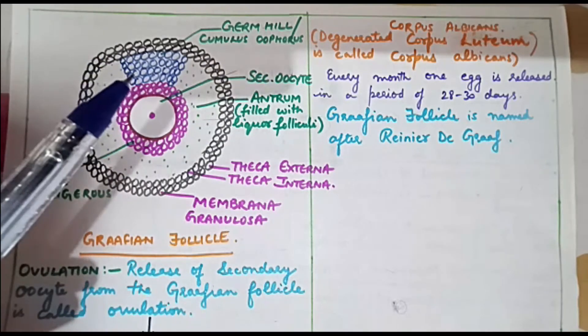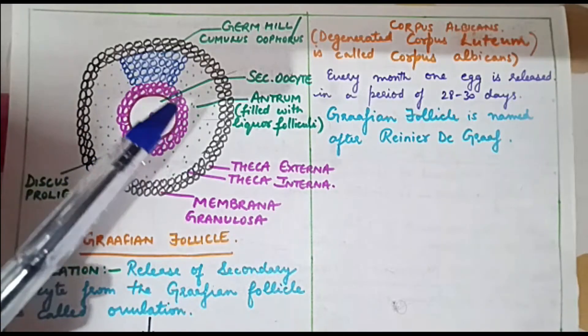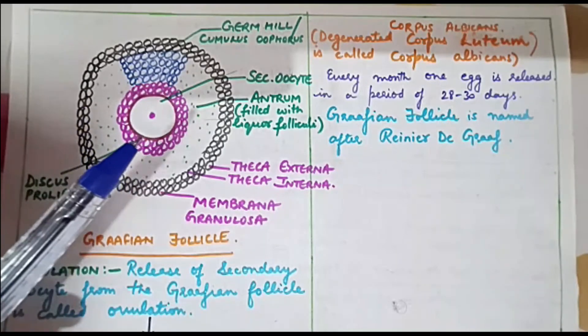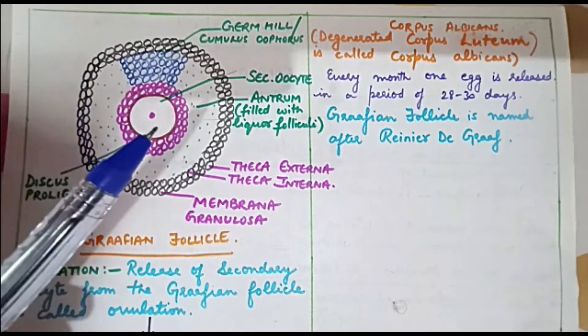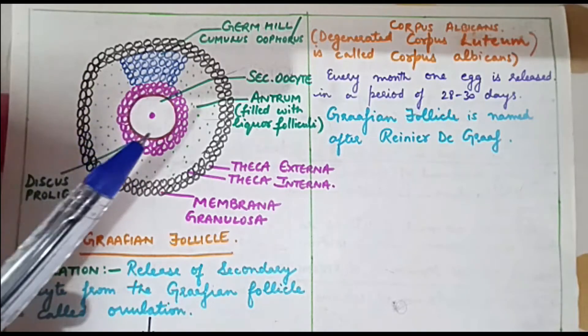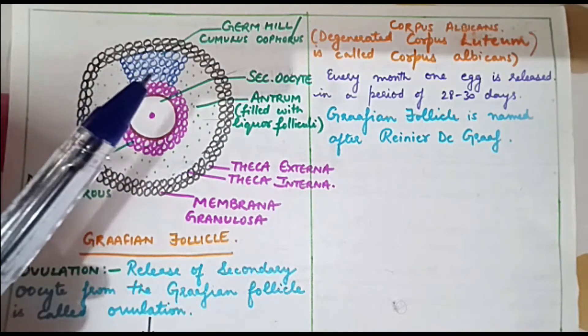With the help of these cells, the secondary oocyte and discus proligerus are in a way suspended inside the Graafian follicle. This means secondary oocyte and discus proligerus hang in this cavity, the antrum, with the help of this germ hill.